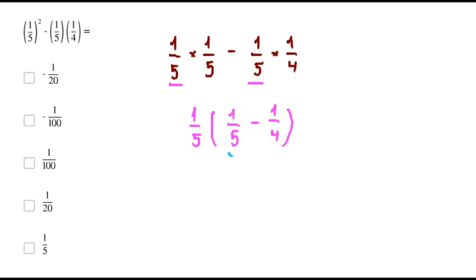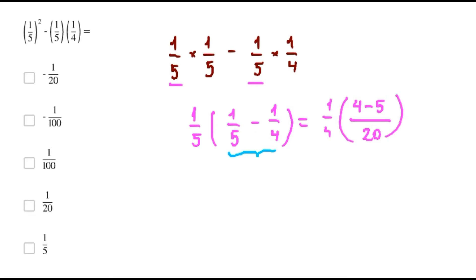Now, to solve this one, we get that the least common denominator is 20. In here we have 4 minus 5. Finally, we have 91 over 100.